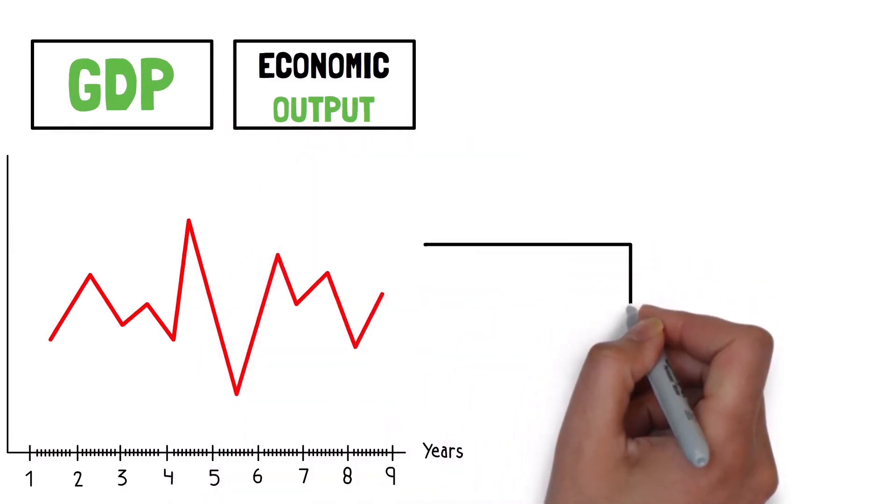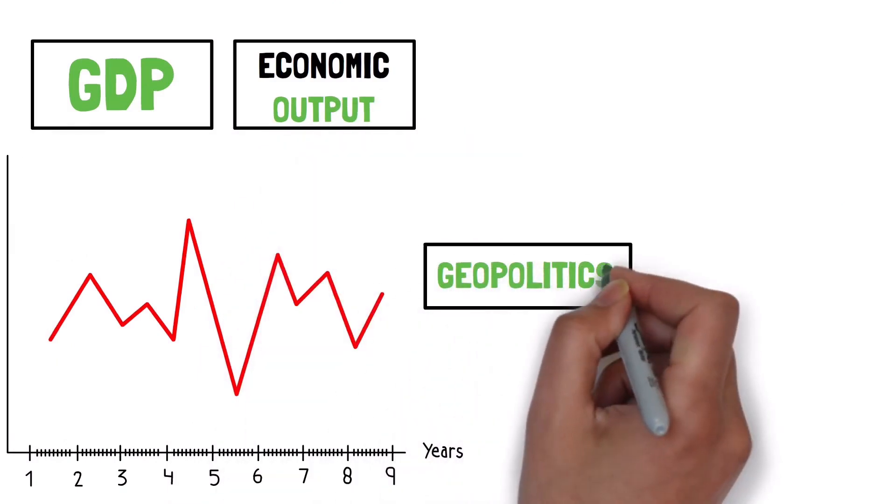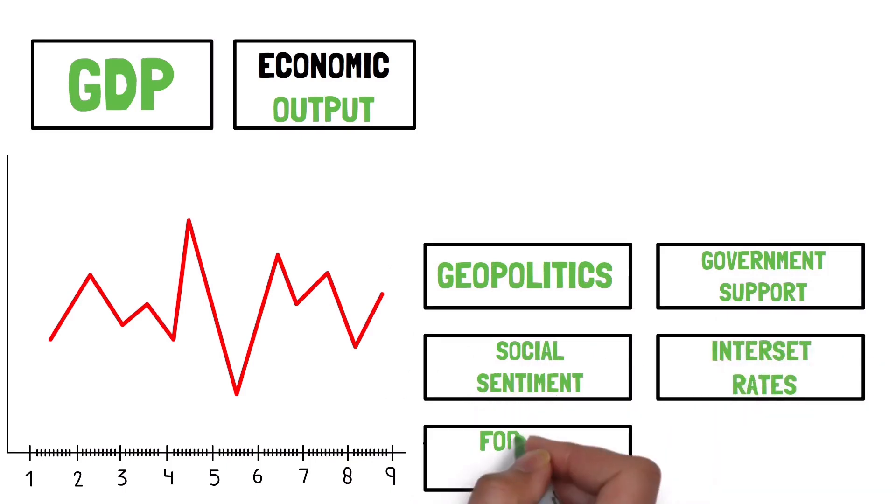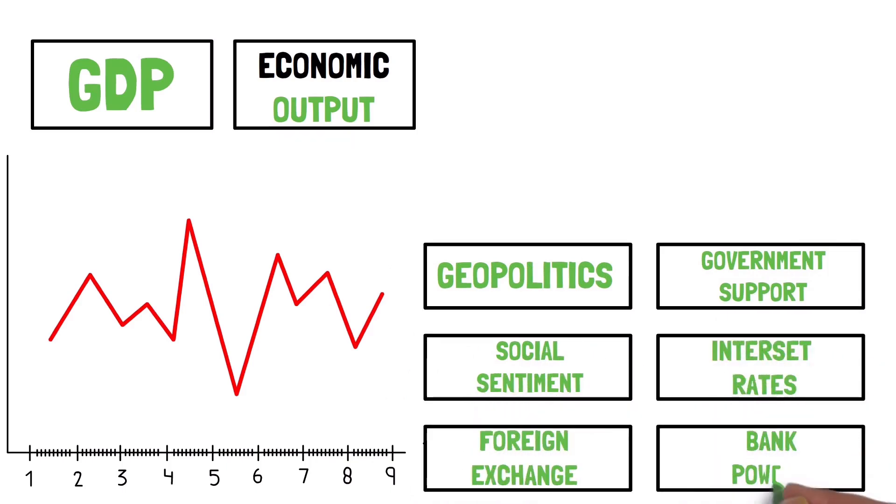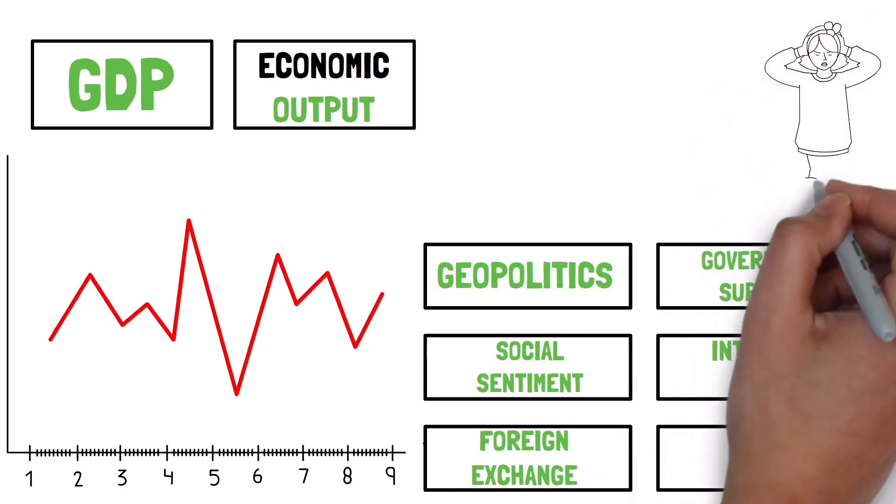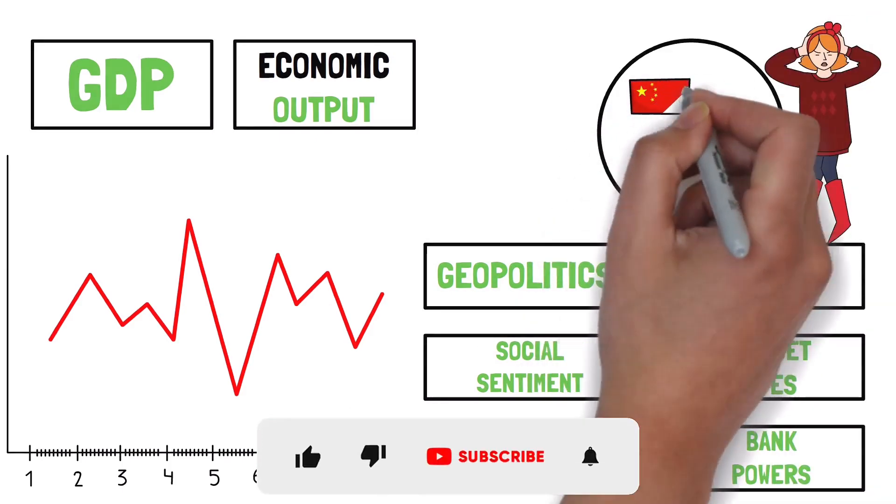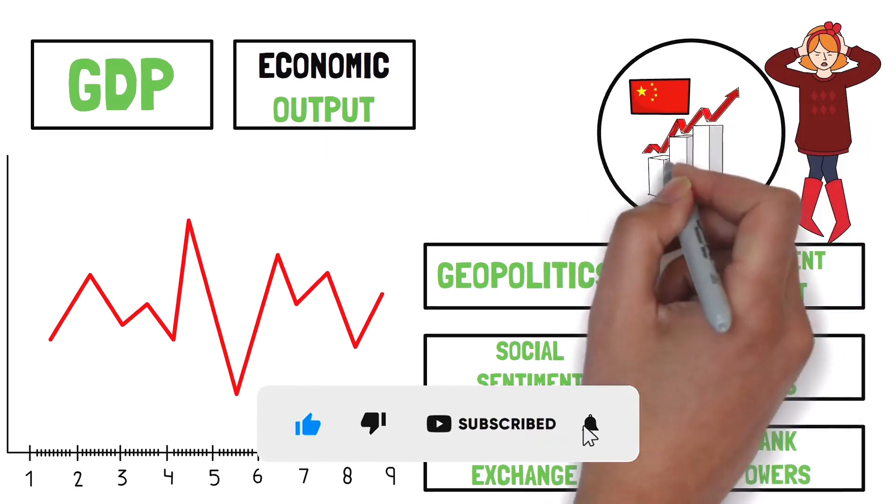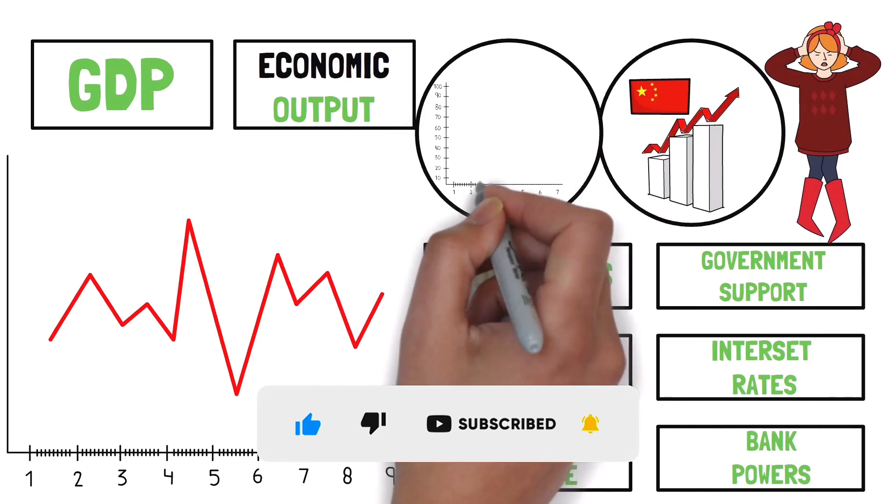It also has to do with things like geopolitics, government support, social sentiment, interest rates, foreign exchange rates, central bank powers. It is so much more complicated than any one factor. And it's also why, even though China has had insanely amazing growth over the last few decades, the US stock market still did better.